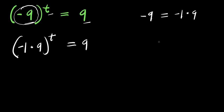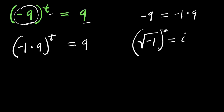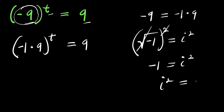Now, considering this identity: the square root of negative 1 equals i, meaning the imaginary number i. If I take the squares of both sides, the square root eliminates the square, and I have negative 1 equals i to the power of 2. So i squared equals negative 1, and since there is a negative 1 in our equation, I can replace that negative 1 with i squared.